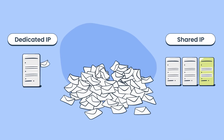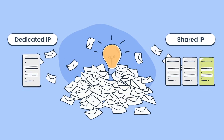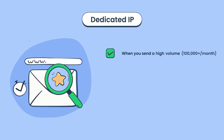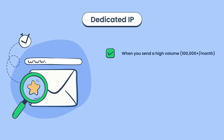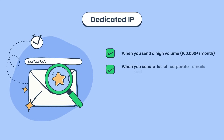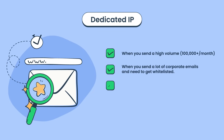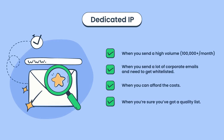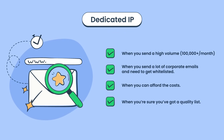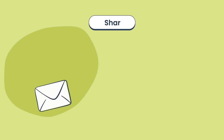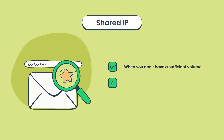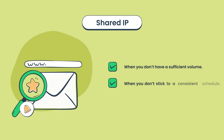So, if both choices have pluses and minuses, how do you choose one? Well, go with a dedicated IP when you regularly send a high volume of emails, need to get whitelisted for corporate emails, don't mind the extra cost, or you have an email list with quality subscribers and want to keep it that way. And go with a shared IP when you don't have a high sending volume, consistent sending schedule, or a high budget.